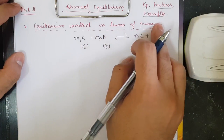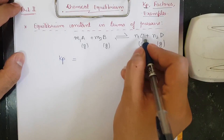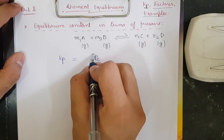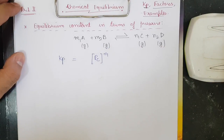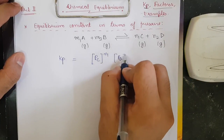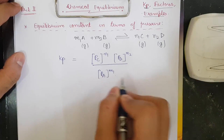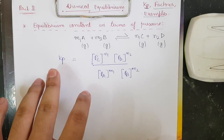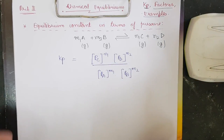We are dealing with the equilibrium constant in terms of pressure, represented by Kp. It is equal to the partial pressure of C raised to power n1, times the partial pressure of D raised to power n2, whole upon the partial pressure of A raised to power m1, times the partial pressure of B raised to power m2. Everyone is assumed to be in gaseous form; solids and liquids are taken to be equal to 1.